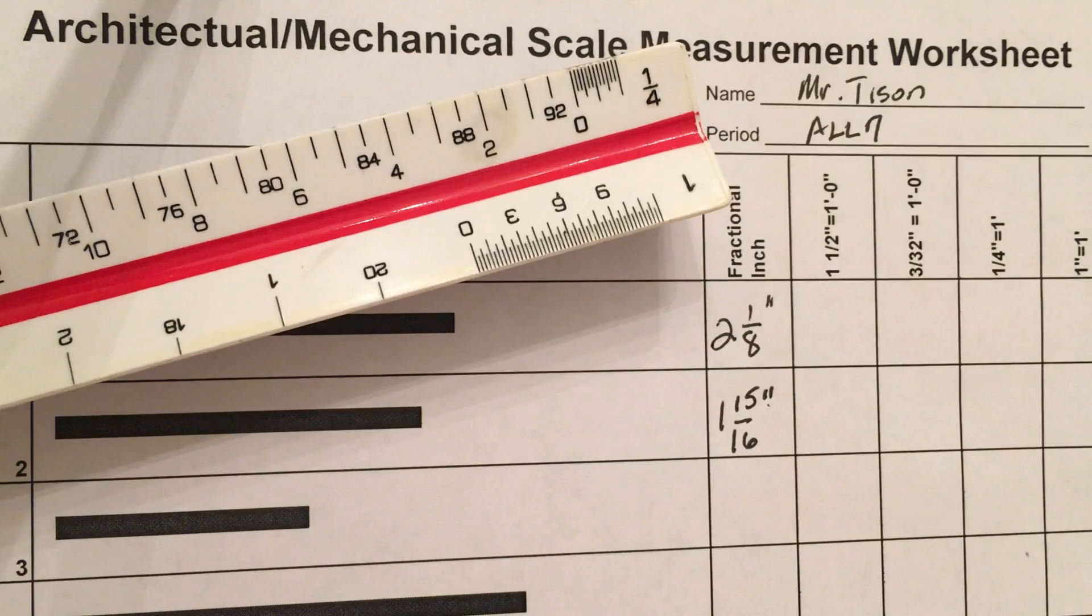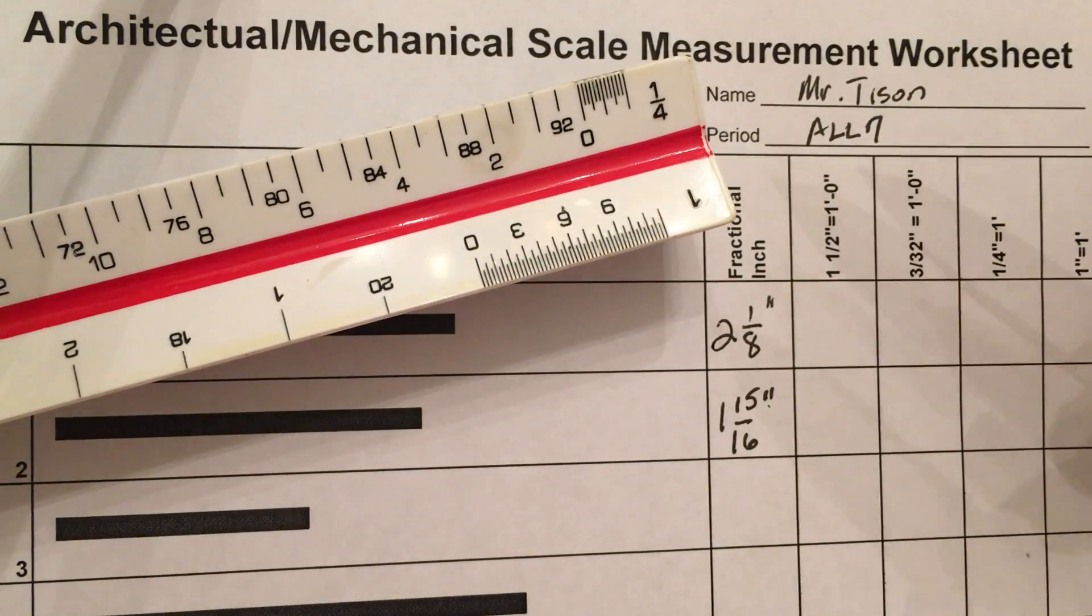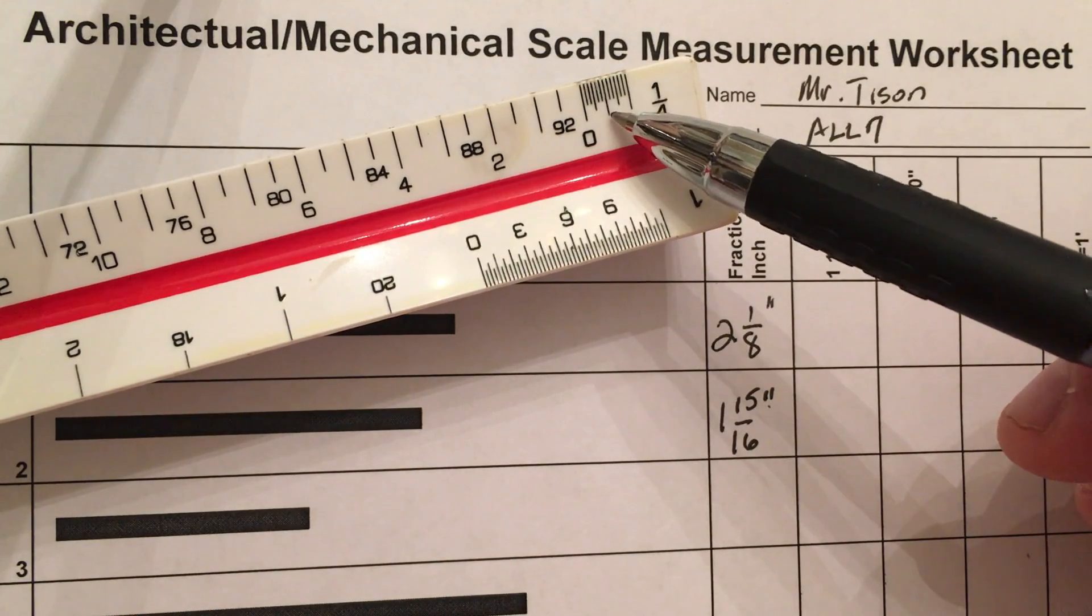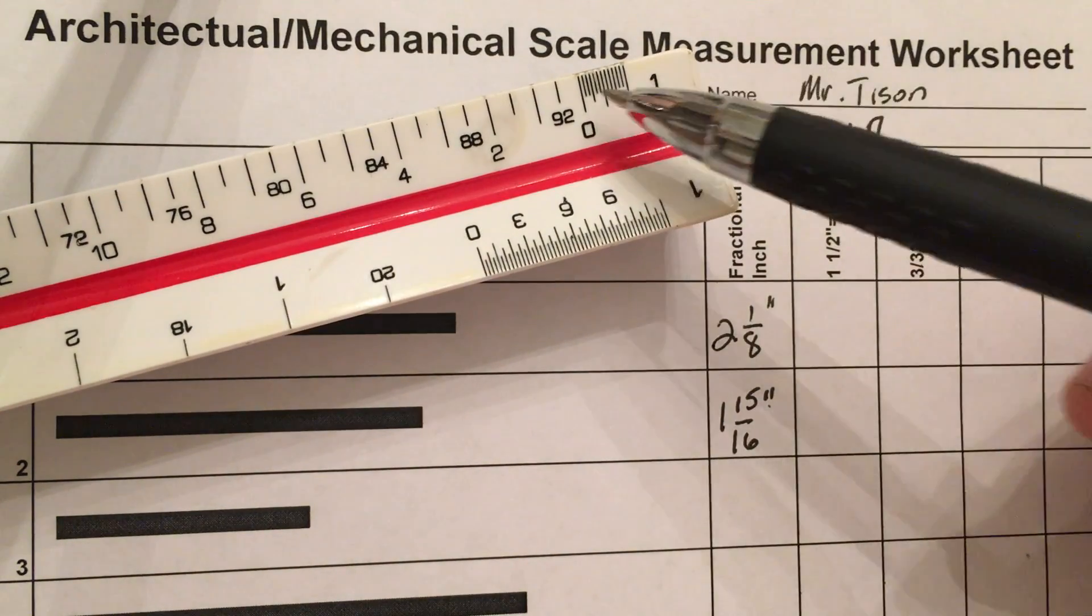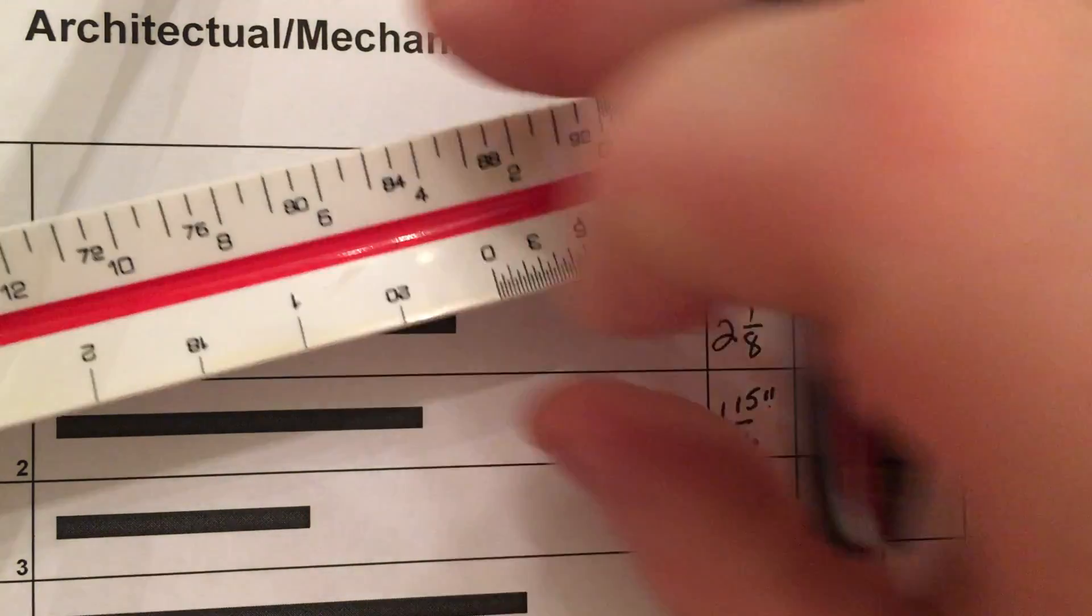I want to make sure it equals a foot and the way I do that is with the gross measurement. I know I have 1, 2, 3, 4, 5, 6, 7, 8, 9, 10, 11, 12 divisions, which means this represents a foot.